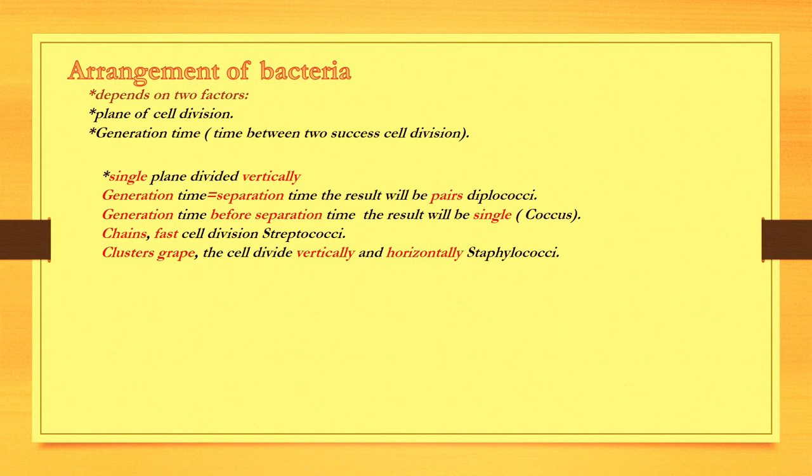An important piece of information: a single plane that divides vertically. Hence we have found that if the plane and separation are equal, we have two pairs of cells that are conjoined upon division.